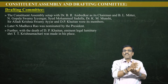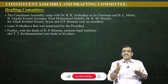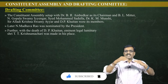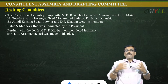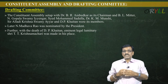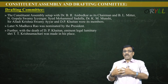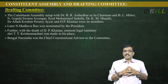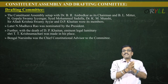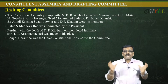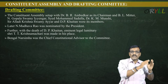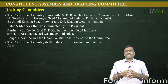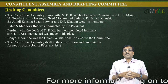They had a list ready in case a member was unavailable. In place of D.P. Khaitan, T.T. Krishnamachari — a great advocate from the then Madras state — was appointed. Bengal Narsimha was the Chief Constitutional Advisor to the Drafting Committee, guiding them on any constitutional matters. The Constituent Assembly drafted the constitution and circulated it for public discussion in February 1948.